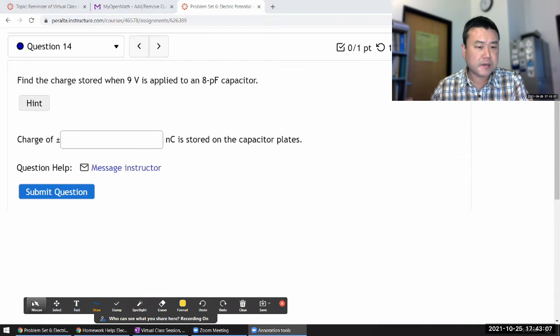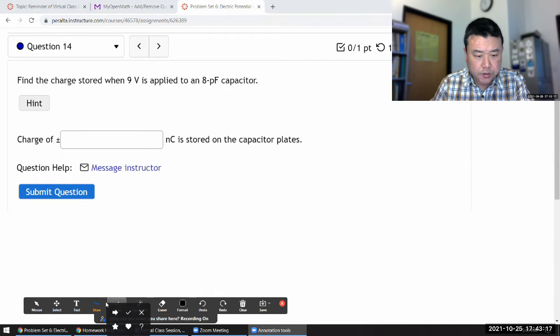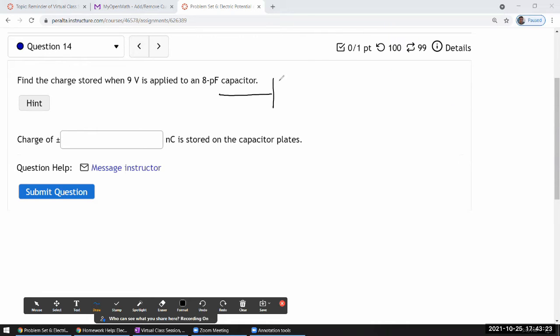Question 14. It's asking for finding the charge stored on a capacitor when some amount of voltage is applied. So the physical picture I want you to have in mind is this picture. You have a capacitor represented by two parallel lines of equal length and you are given some amount of capacitance and they're just telling you how much voltage difference is imposed across this capacitor.